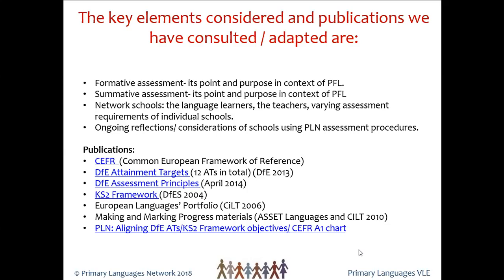The publications I mentioned have informed how we've developed the tracking and assessment tools. The Common European Framework of Reference is something some of you may already have been measured against — if you've been away with Erasmus, you will have been asked whether you were A1, A2, or B1 in your ability to speak a foreign language. The DfE attainment targets — there are 12 of them — are signposts for the full four years across key stage two from year three to year six, showing how the children should be progressing toward those signposts.